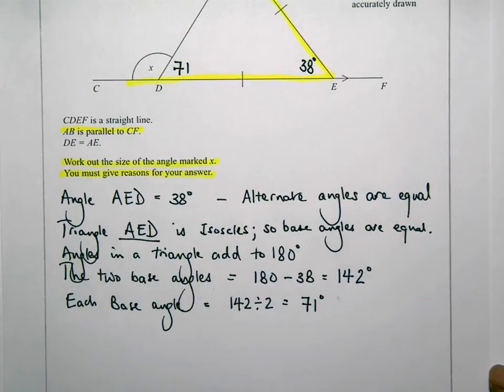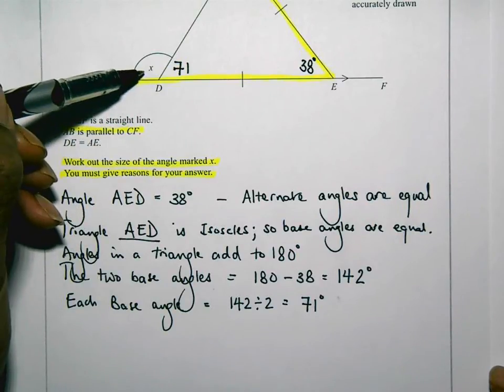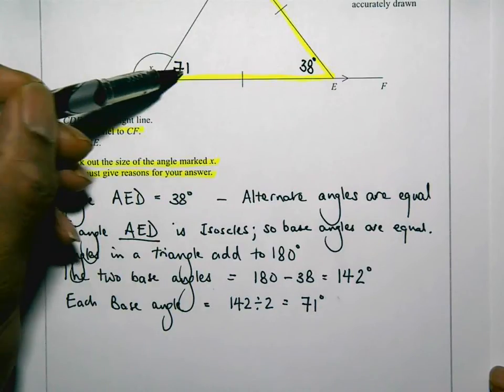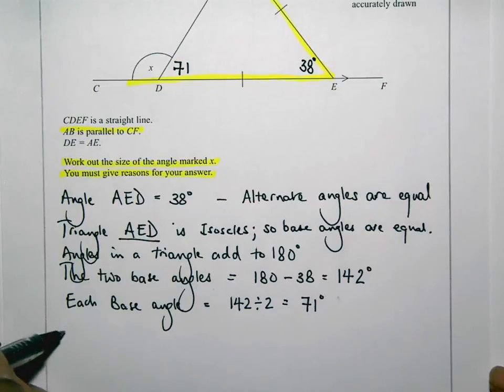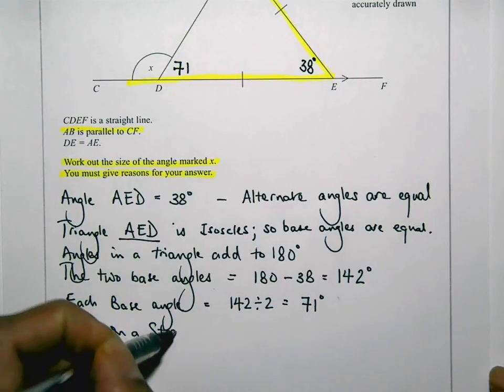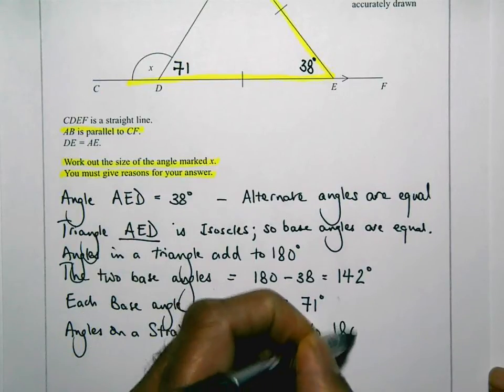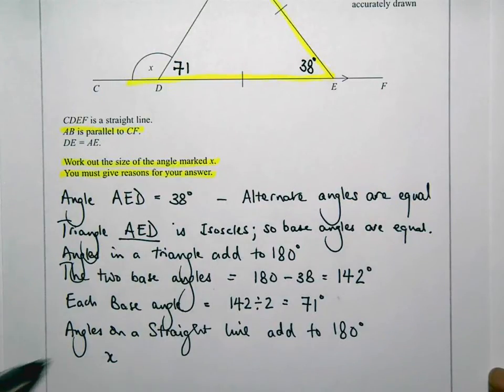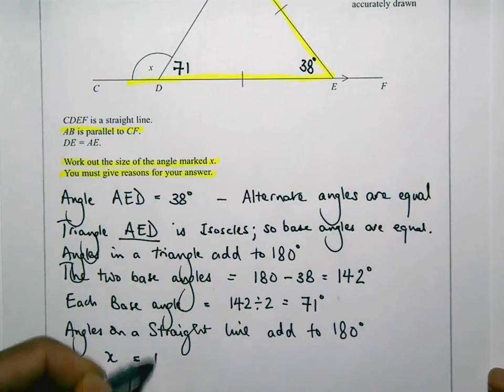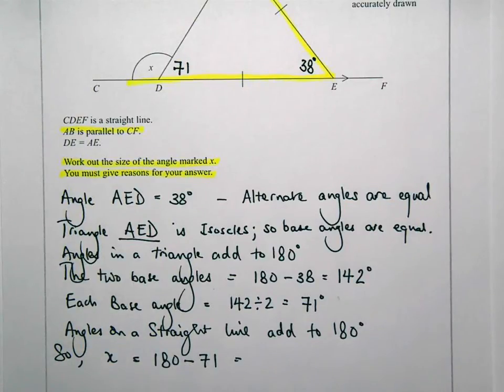Now, I'm very close to working out what X is because if that's 71 degrees, I could work out X because the angle X and 71 are in a straight line. So I'm going to put that as well, that angles on a straight line add to 180 degrees. And so what that means is X is going to be 180 take away 71. 180 take away 71: 180 take away 70 is 110, 110 take away 1 is 109 degrees. So that means X is going to be 109 degrees.